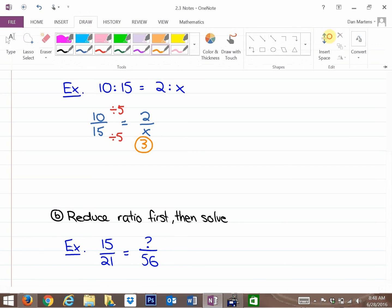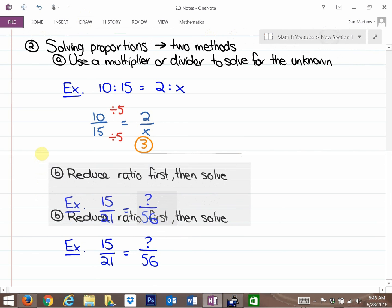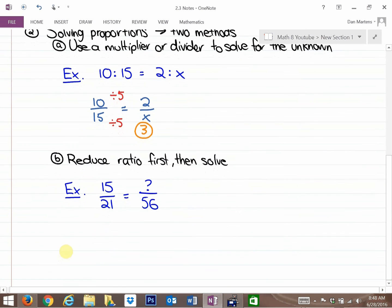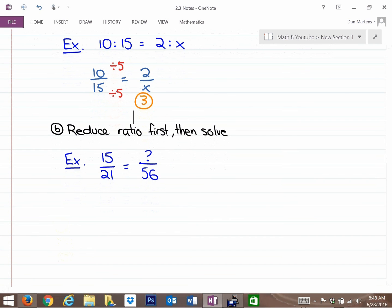In this next example, it's a little bit more tricky because it doesn't have an integer multiplier to solve for the unknown. So we'll notice that right here. So in order to do that, method number two is to reduce the ratio first and then solve, although there is another method.